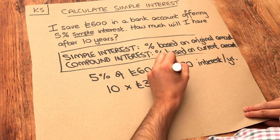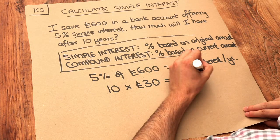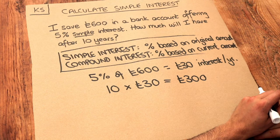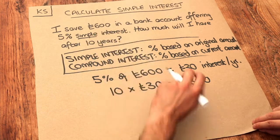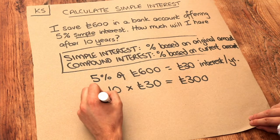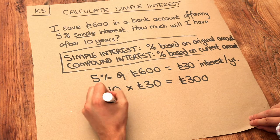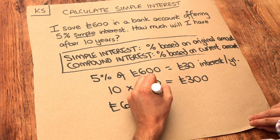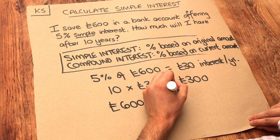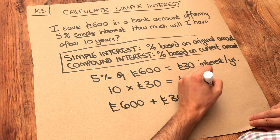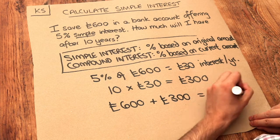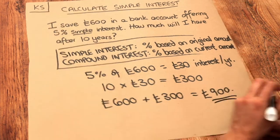That means in total the bank is going to give us £300 over the 10 years. So then we just need to add that on to the £600: £600 plus £300 means I'm going to have £900 in total. And that is the final answer.